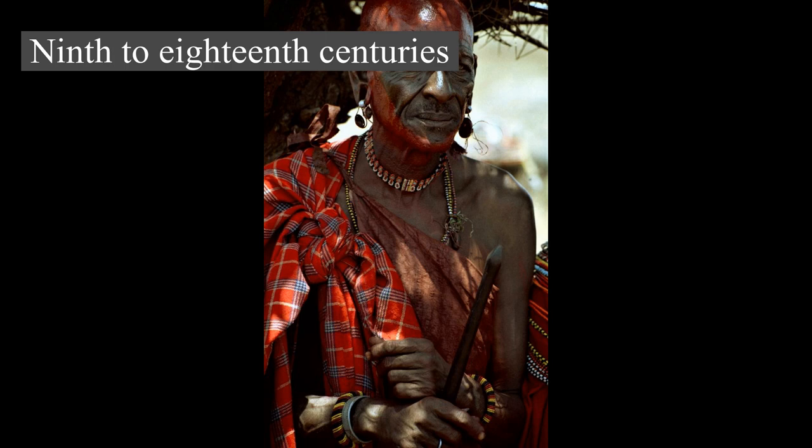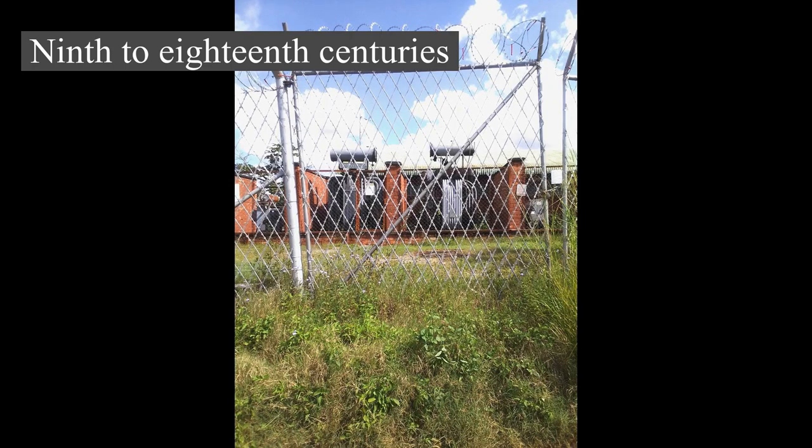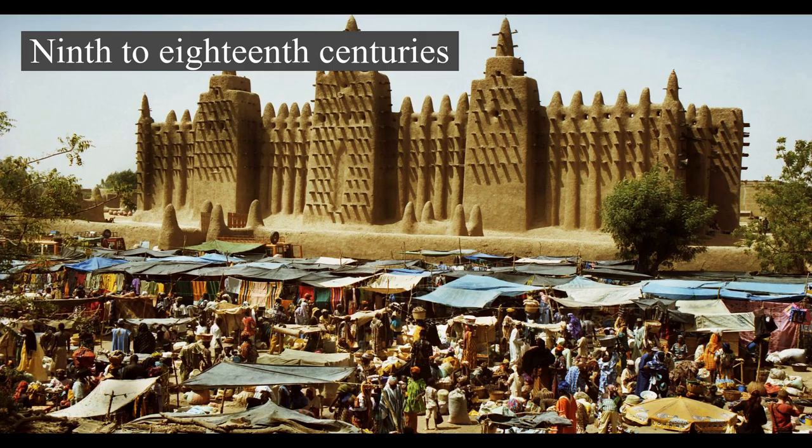Following the breakup of Mali, a local leader named Sunni Ali (1460–1492) founded the Songhai Empire in the region of Middle Niger and the western Sudan, and took control of the trans-Saharan trade. Sunni Ali seized Timbuktu in 1468 and Djenné in 1473, building his regime on trade revenues and the cooperation of Muslim merchants.